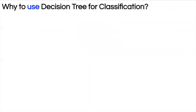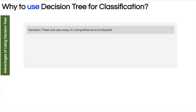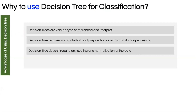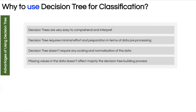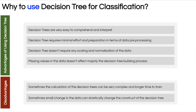Decision trees have several advantages: they are very interpretable and easy to comprehend; they don't require much data preprocessing such as normalization or scaling; and missing values don't adversely affect the building process. However, there are disadvantages: the calculation can be complex and time-consuming, and small changes in the data can drastically change the structure of the tree.